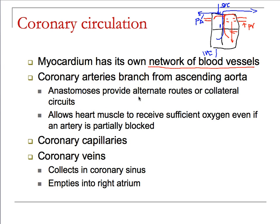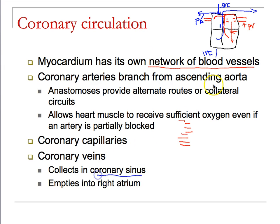We're now going to build a network of blood vessels — coronary branches from the ascending aorta. These anastomoses create collateral circuits, meaning if one capillary bed gets blocked, the adjacent one's diffusion can support it for a period of time. You also have coronary veins, and everything drains to the area of lowest pressure — the coronary sinus — which drains into the right atria.